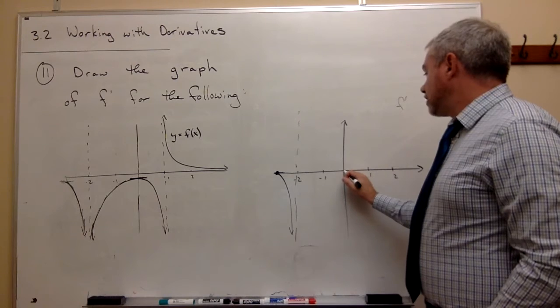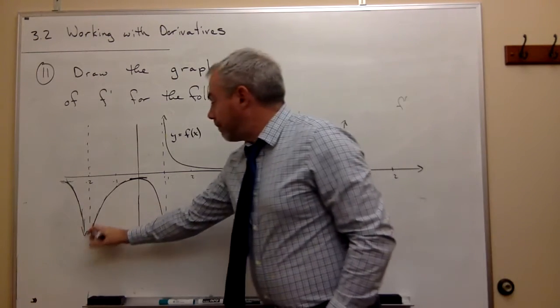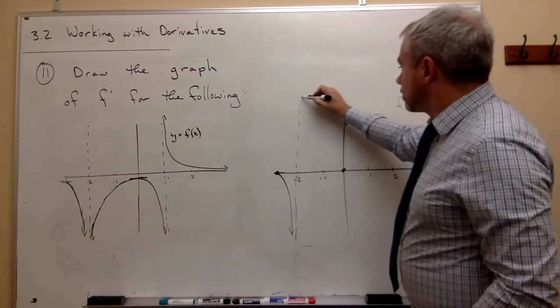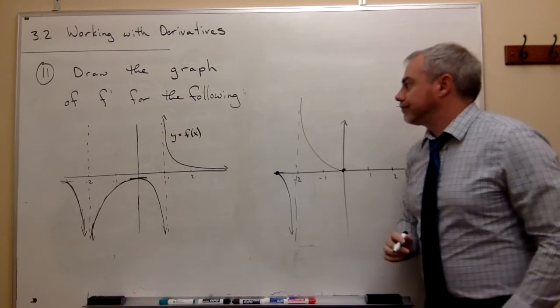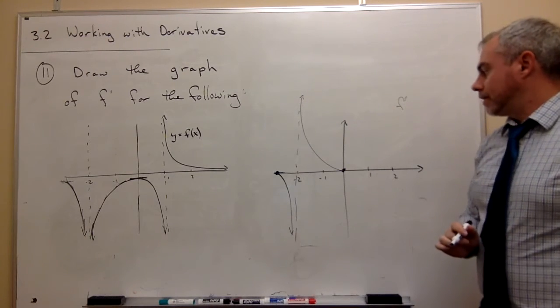So at 0, the slope is 0. And I have very positive slopes, so extremely positive, and it comes down to 0.